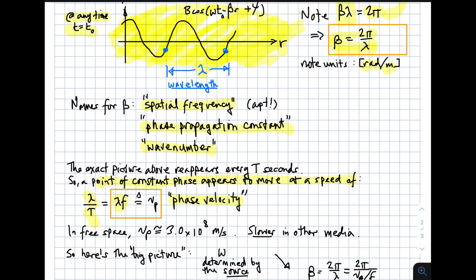One of the triumphs of 19th century electromagnetic theory is that we know that the phase velocity for any electromagnetic wave in free space is 3 times 10 to the 8th meters per second. That's approximately, but it's very close to that number. And we also know that in other media, say dielectric materials, such as glass, or other things, it's somewhat slower, maybe slower by as much as 50% or so.